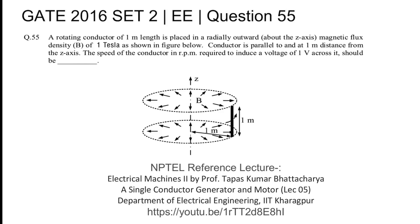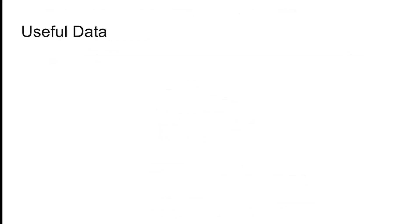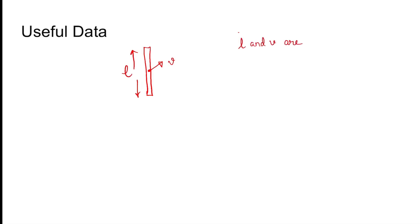The question asks us to find the RPM with which the conductor should be rotated to produce 1 volt. When you rotate a conductor it has some tangential velocity V. If the conductor is of length L, then L vector and V vector must be 90 degrees or perpendicular to each other.